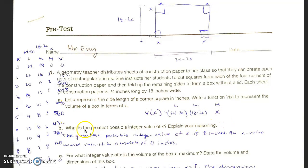So that's A. Part B: What is the greatest possible integer value of x? So basically they're saying what value can you actually put in there and still get a volume. So I made a chart. We did this in our packets.